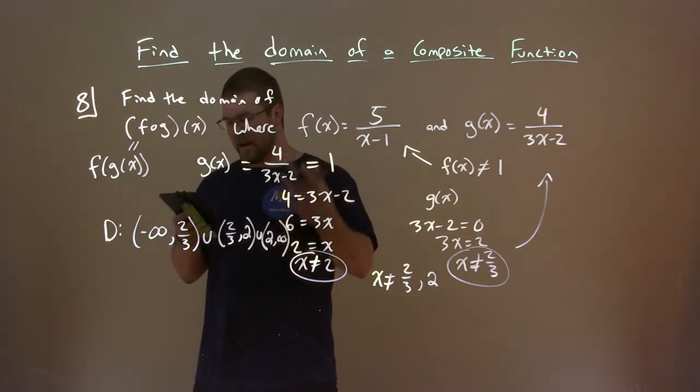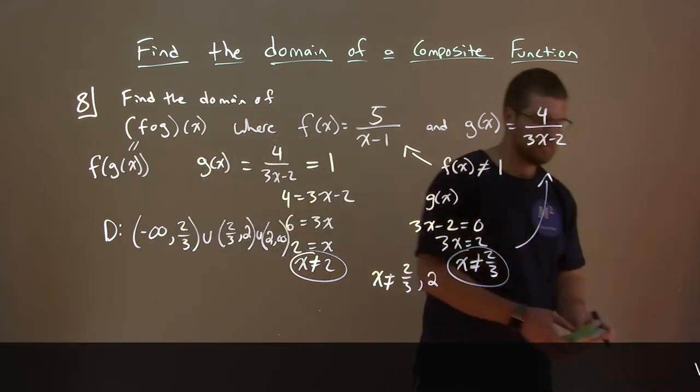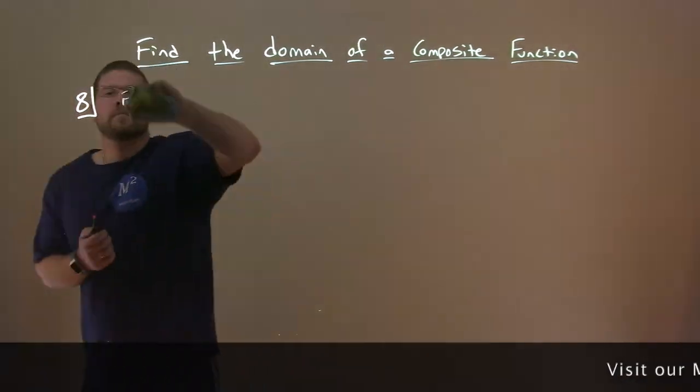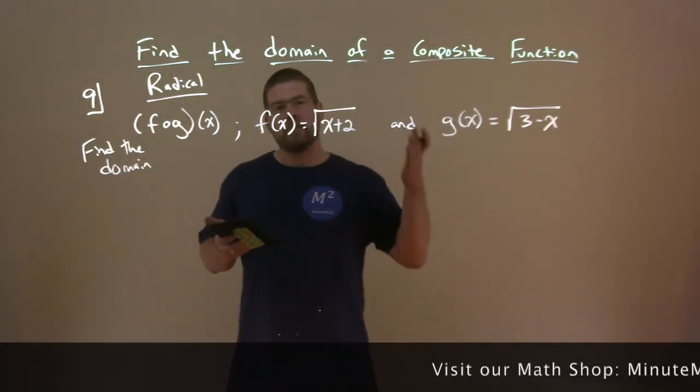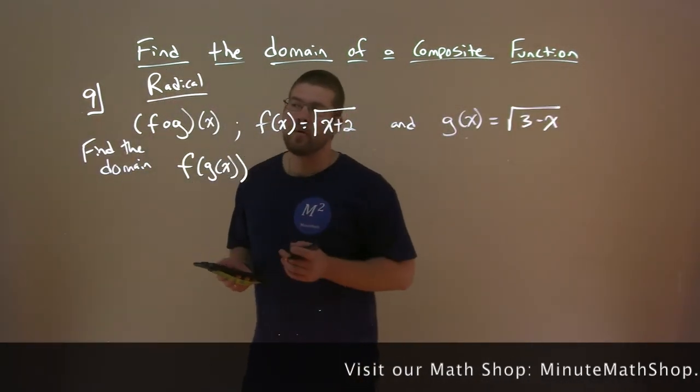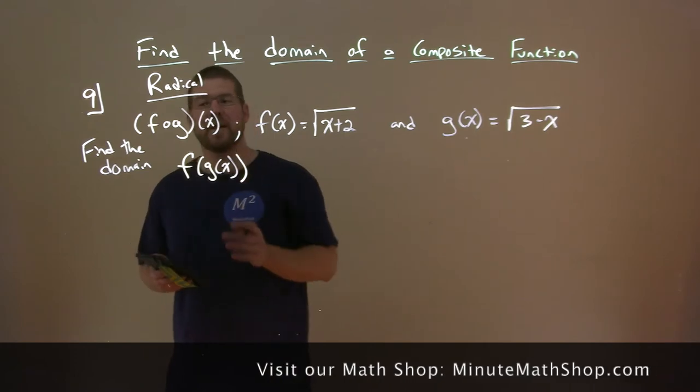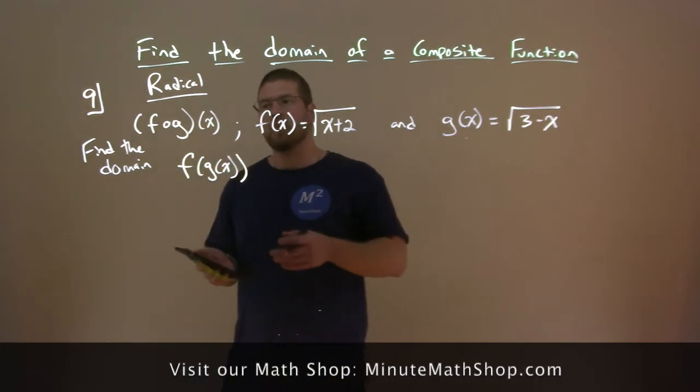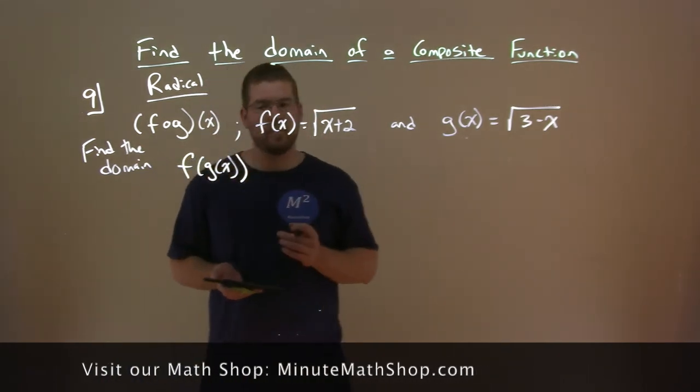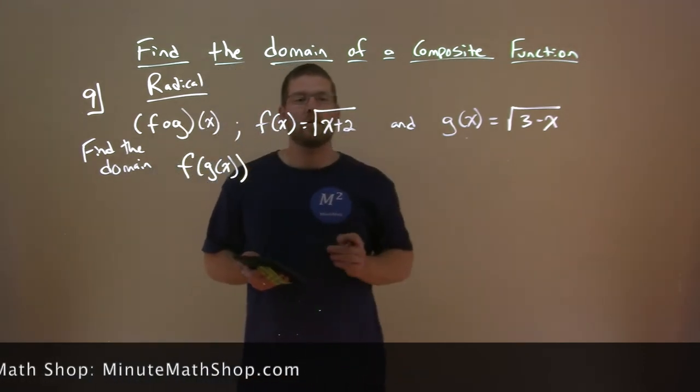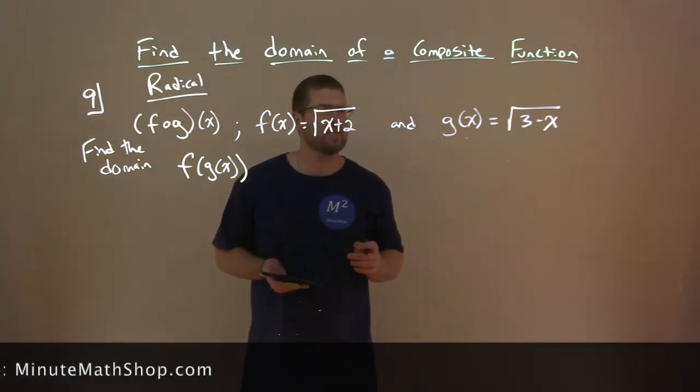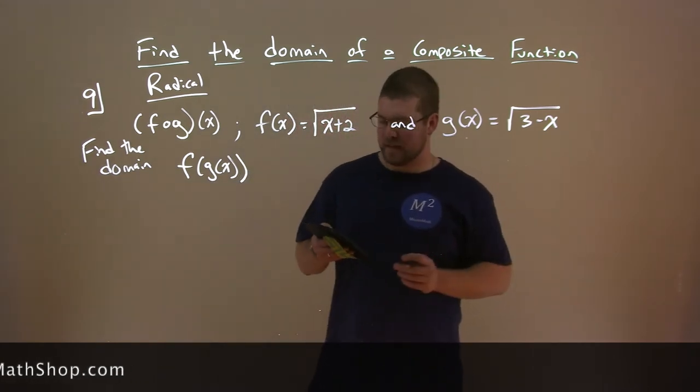Alright. So let me go erase this so we can get another example for you. Okay. So now what we're going to do is find the domain here of a radical function. We're given f of g of x. I'm going to find that domain. It also can be written like this. We know f of x is equal to the square root of x plus 2, and g of x is equal to the square root of 3 minus x here.